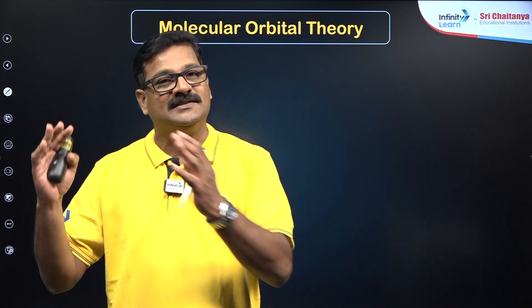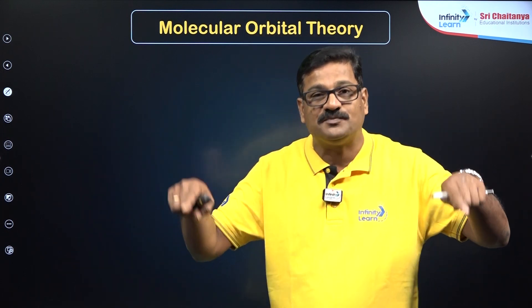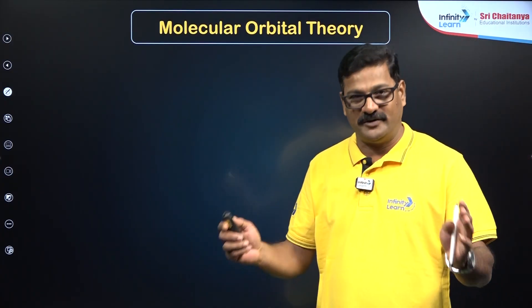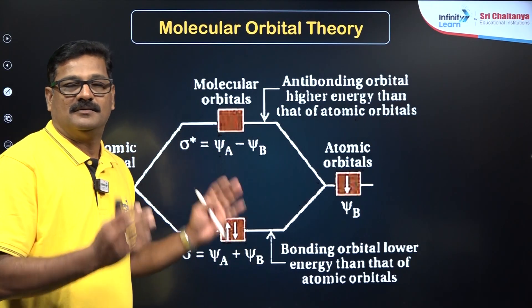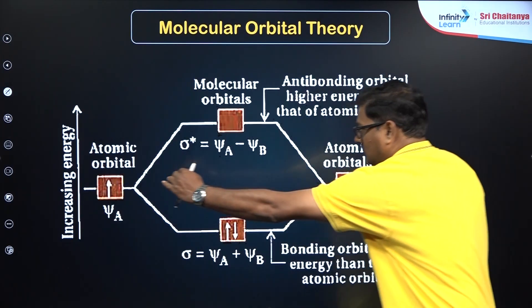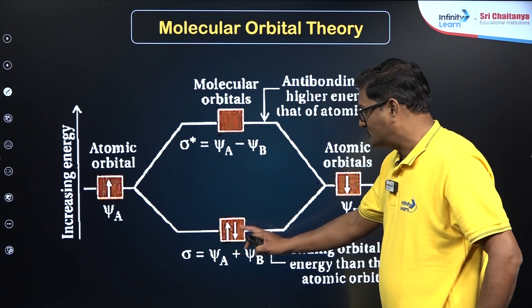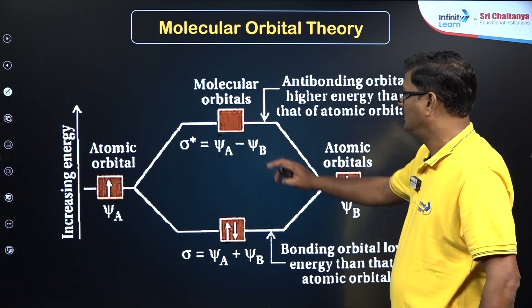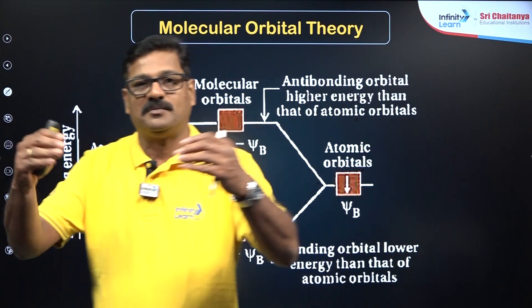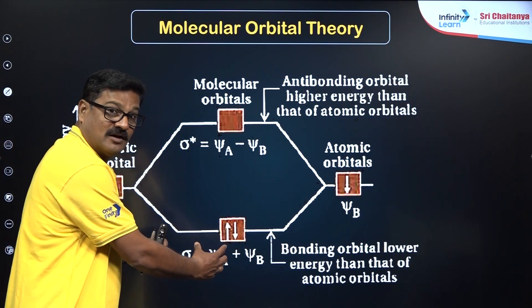Just like atomic orbitals where electrons are present in one atom, when atoms combine they form a molecule, so the electrons present in the molecule should be present in orbitals within the molecule — these are called molecular orbitals. This is explained on the basis of Linear Combination of Atomic Orbitals (LCAO). It says that whenever atomic orbitals combine, they give two sets of orbitals: one set with low energy called bonding molecular orbitals, and another set with high energy called antibonding molecular orbitals. The number of atomic orbitals involved equals the number of molecular orbitals formed.